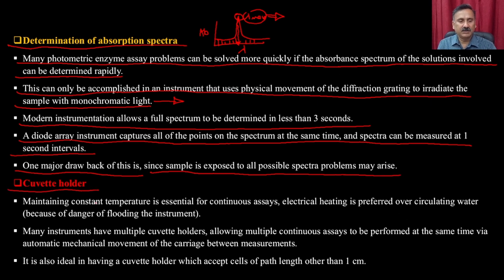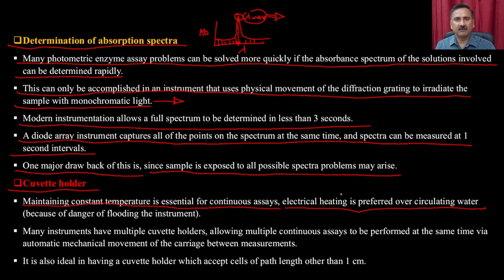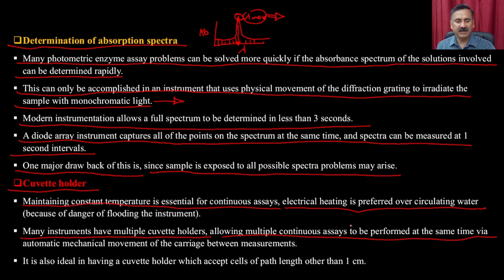Maintaining constant temperature is essential for continuous assays. Electrical heating is preferred over circulatory water bath because water circulation has more fluctuation. Many instruments have multiple cuvette holders allowing multiple continuous assays to be performed simultaneously with automatic mechanical movement of the carriage. It is also ideal to have a cuvette holder that accepts cells of path lengths other than one centimeter.